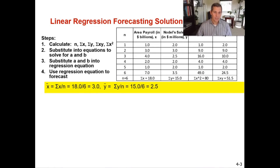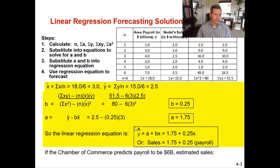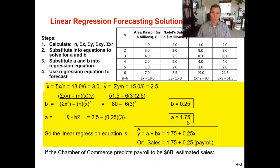Now that we have x-bar and y-bar, we can calculate the slope and the y-axis intercept. You've calculated your x-squared, your xy, your x-bar, and your y-bar — plug all of them in and that gives you your slope b of 0.25. Your a, the y-axis intercept, is y-bar minus slope multiplied by x-bar, which gives you 1.75.